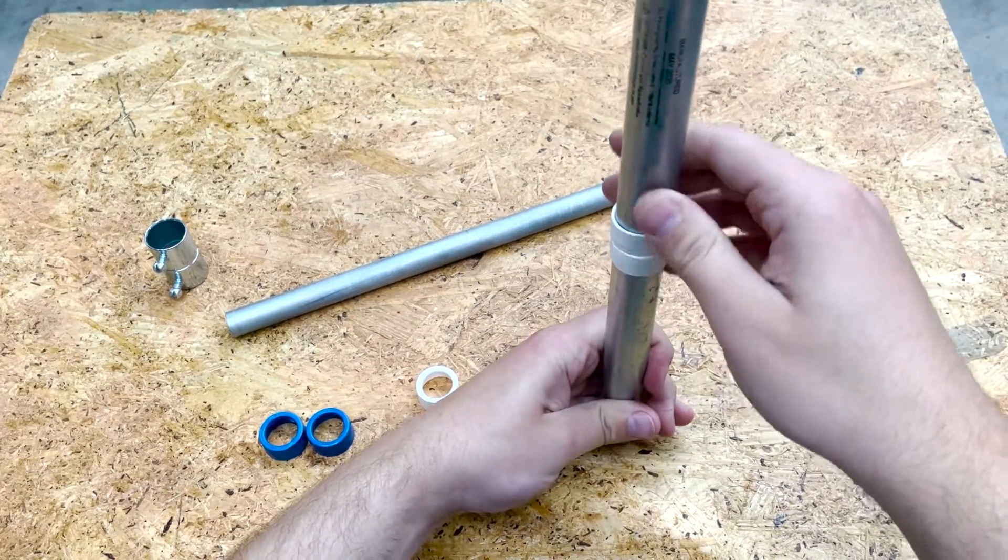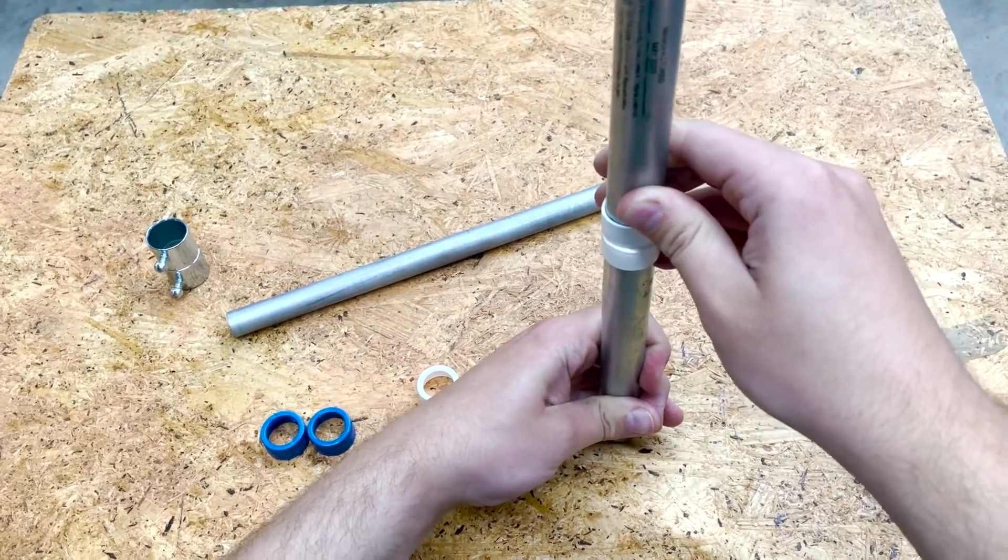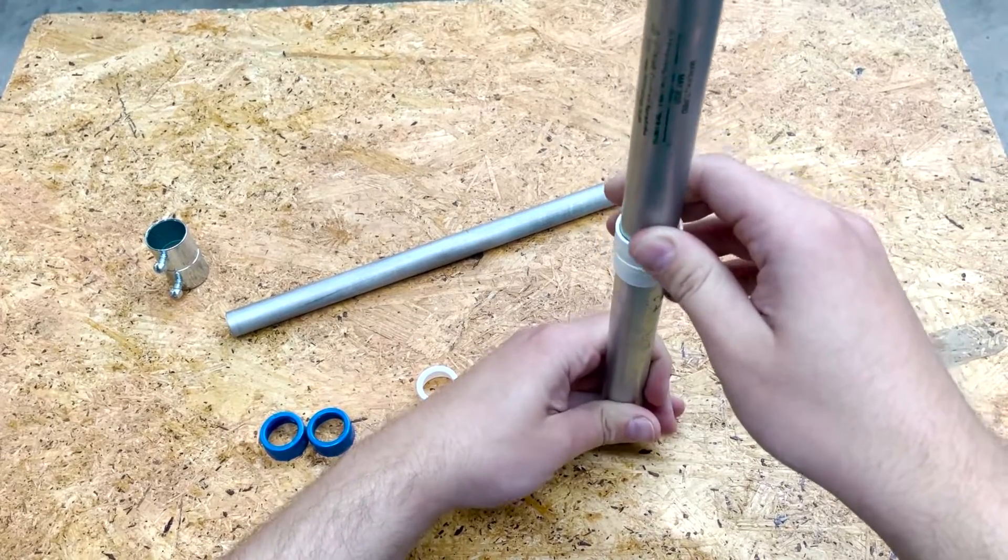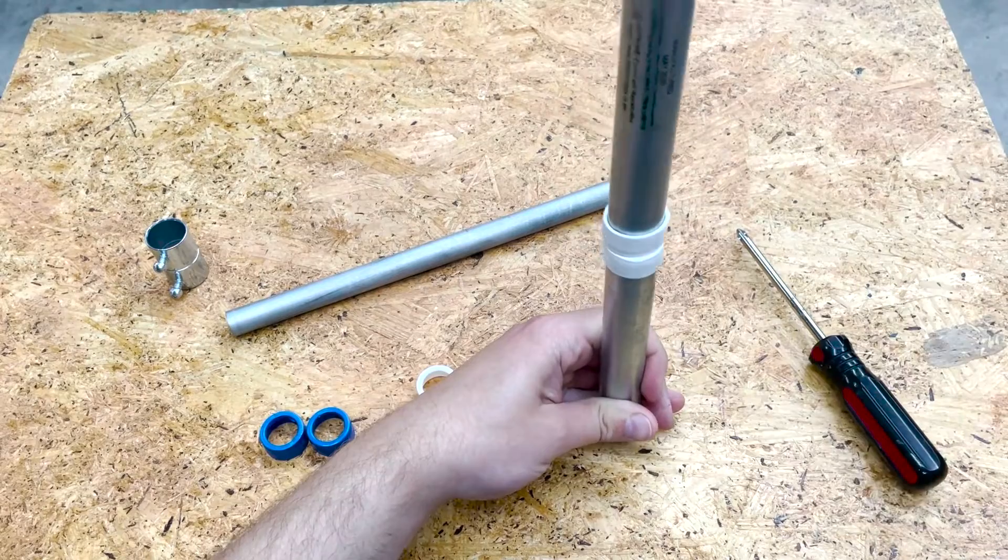Basically, it just sat loosely like this and then had a strong connection between the two. But then it was easy to separate the two halves whenever they needed to do that.